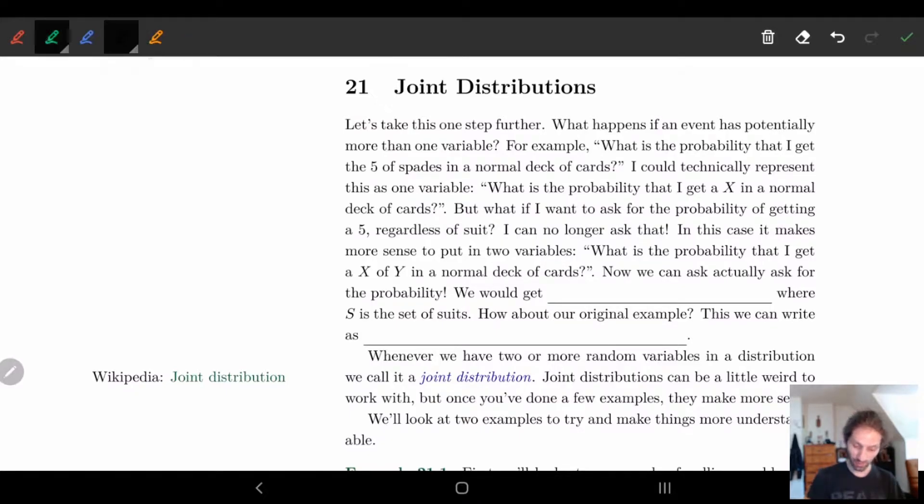So let's start off with an example. What is the probability that I get the five of spades in a normal deck of cards? Normally when we think about this, I can technically represent the five of spades as my variable. So I can say what is the probability that I get x in a normal deck of cards? But this kind of restricts us. What happens if I want to look at just how often I get a five, I don't care what the suit is, or what happens if I want to know how many spades I have but I don't care about the number?